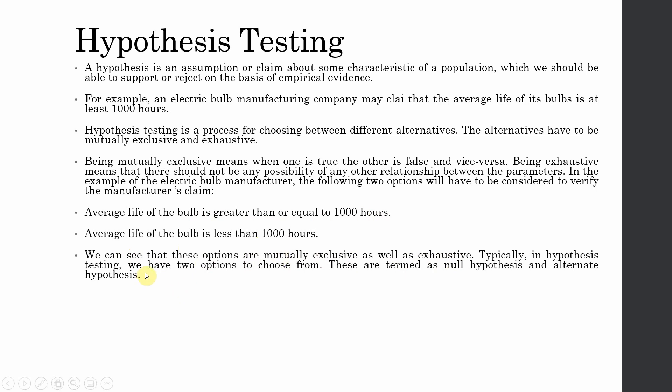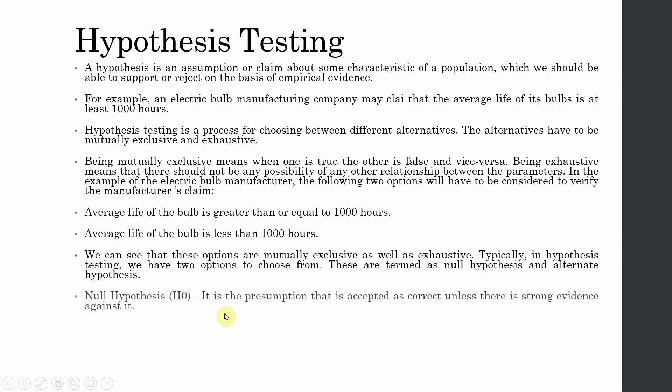Typically in hypothesis testing we have two options: the null hypothesis and the alternate hypothesis. The null hypothesis is the presumption accepted as correct unless there is strong evidence against it. The alternate hypothesis is accepted when H0 is rejected. What actually happens is you are never accepting the alternate hypothesis directly — you either reject the null hypothesis or you fail to reject it.